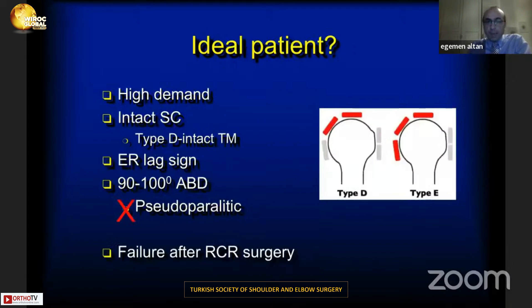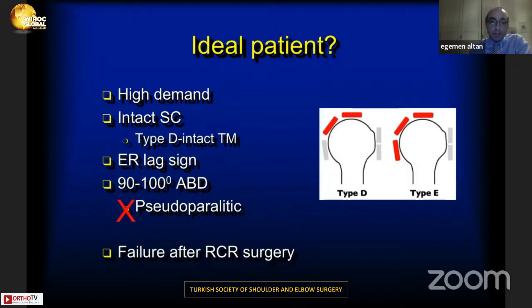What about the ideal patient? A high-demand patient with an intact subscapularis, a positive external lag sign, and 90 to 100 degrees of abduction can be an ideal candidate for latissimus dorsi transfer.